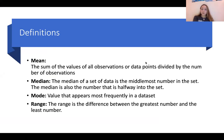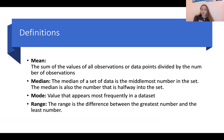I have some definitions for you in case you need a refresher. The mean is the sum of the values of all observations or data points divided by the number of observations. The median is the middlemost number in the set. The mode is the value that appears most frequently in a data set. And the range is the difference between the greatest number and the least number.